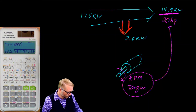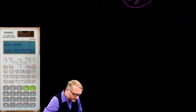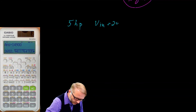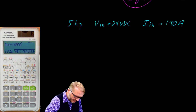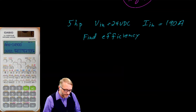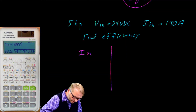Let's work one more motor problem and then we'll move on to our parallel resistors. Suppose you're given a 5 horsepower motor. You know that the voltage in is 24 volts DC, and the current in is 190 amps. You're asked to find the efficiency. This looks like a difficult problem, but it's really not, as long as you keep your bookkeeping straight.